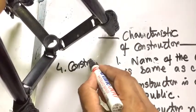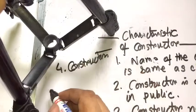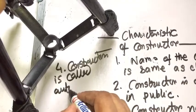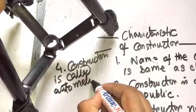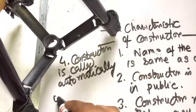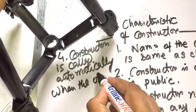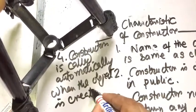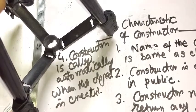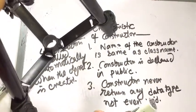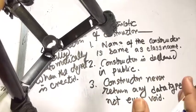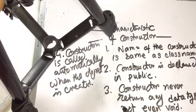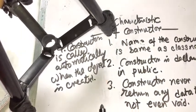Number four: constructor is called automatically when the object is created. The name of the constructor is the same as the class name. Constructor is declared in public. Constructor never returns any data type, not even void.